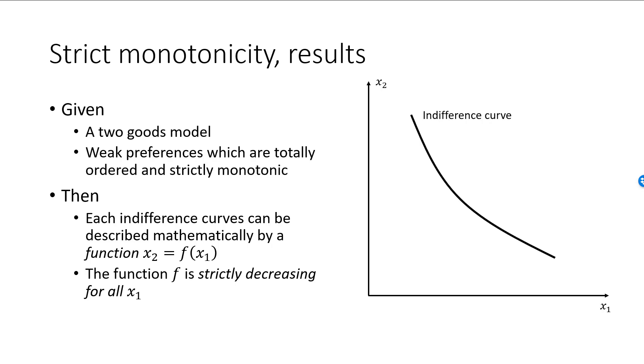So here is the picture of one indifference curve when preferences are strictly monotonic. It is the graph of some function f. It slopes downwards, and given x1, I can plug this value into the function, which will give me x2 such that the (x1, x2) bundle is on the indifference curve.